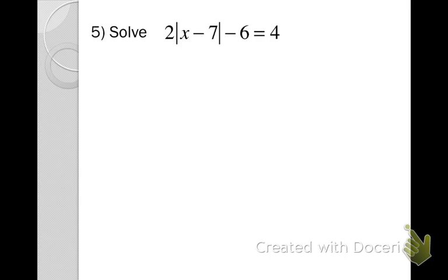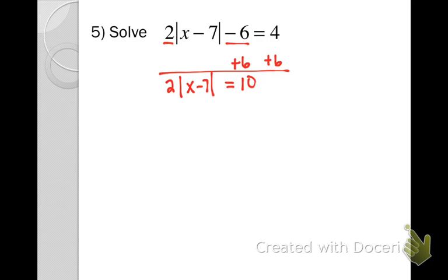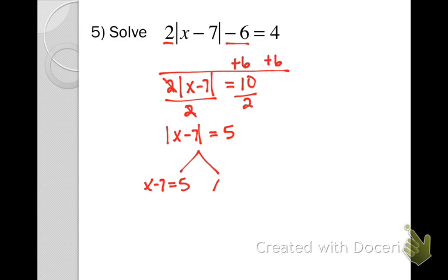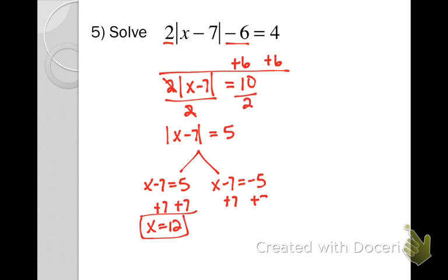In this problem, we have a two out front and a minus six. Recall from concept four, we always add or subtract before multiplying or dividing. So first, add six to both sides to get two times the absolute value of x minus seven equals ten. Then divide both sides by two to get the absolute value of x minus seven equals five. Now split into x minus seven equals five and x minus seven equals negative five. Adding seven gives x equals twelve and x equals two.